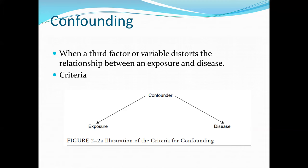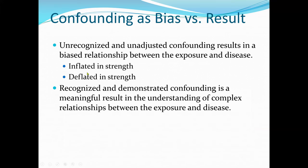Confounding is often a form of systematic error or bias. When a third factor or variable distorts the relationship between an exposure and the disease, that would be an error. Unrecognized and unadjusted confounding results in a biased relationship between the exposure and disease — either inflating or deflating the strength of association between the exposure and the outcome.